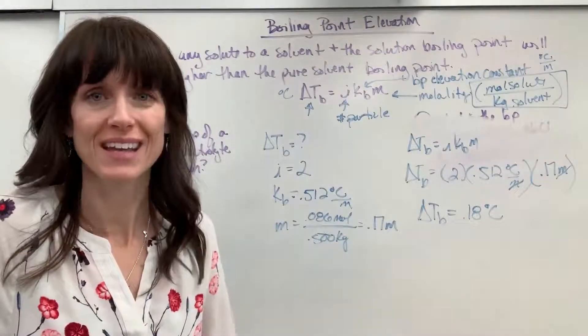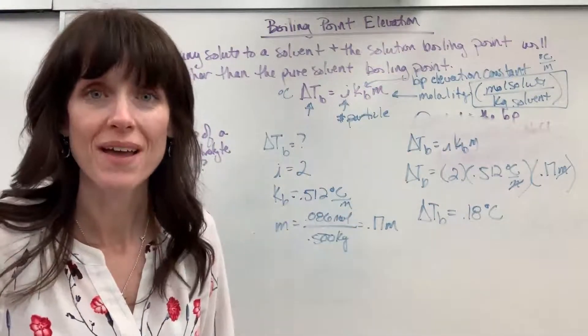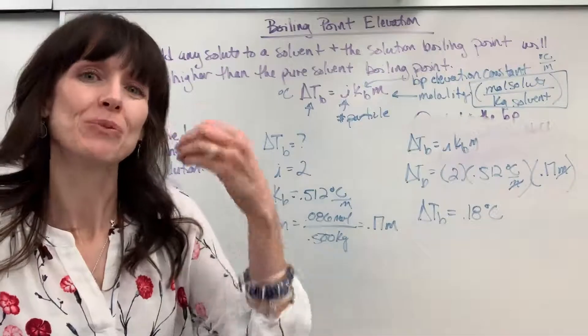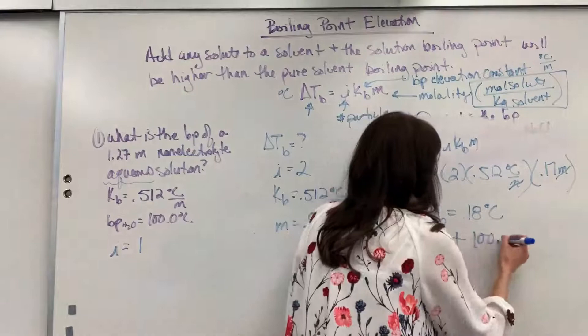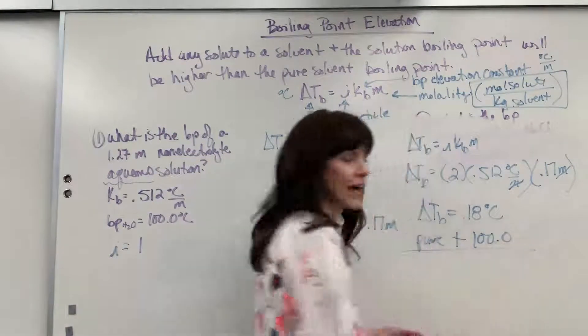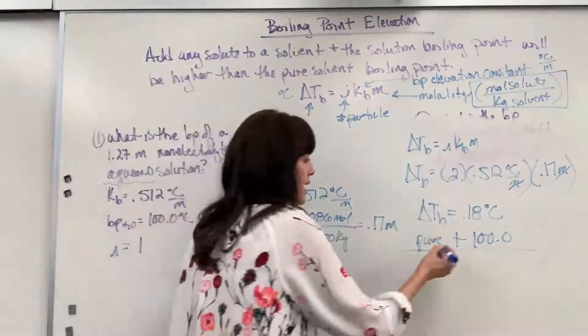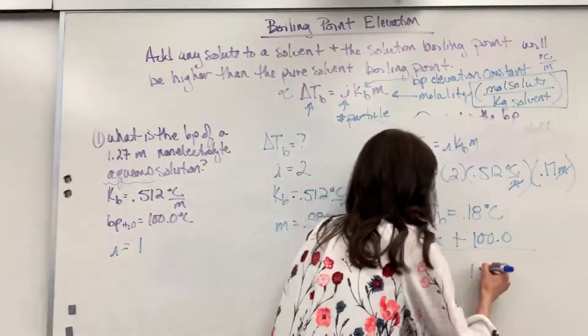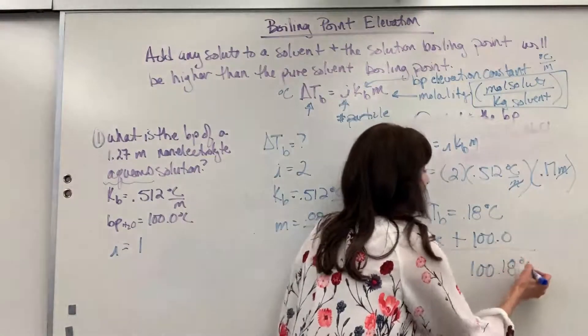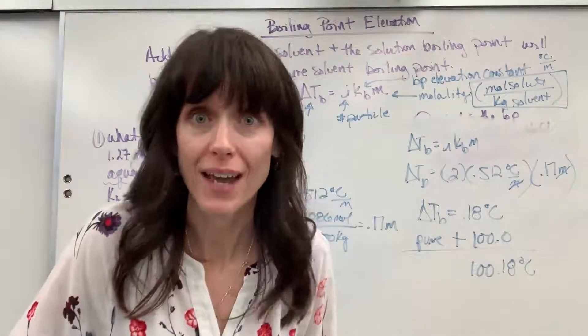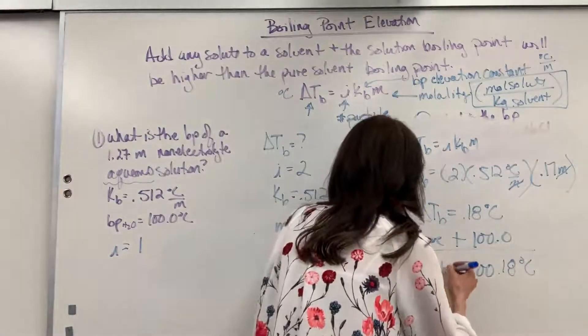So I'm going to ask you the same question. Does that mean that water is going to boil at 0.18 degrees C? No. How do we finish it? They asked for the new boiling point. We add the pure boiling point. Remember that's the pure. So boiling point we add, and this is going to boil at 100.18. Look, we did all this work and instead of boiling at 100 degrees, it's going to boil at 100.18. This is the new boiling point.